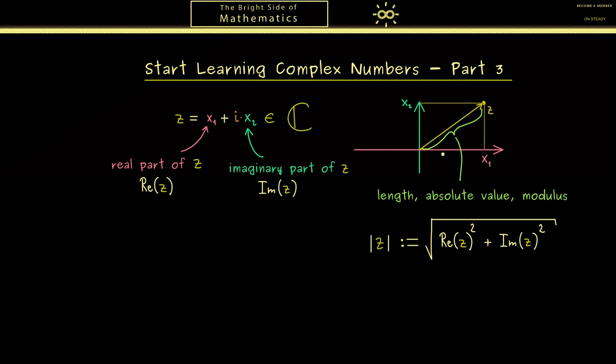So this is the absolute value which gives us the distance from the origin to the complex number. Now I can tell you for calculating this absolute value a reflection we can do in this plane is very helpful for us.